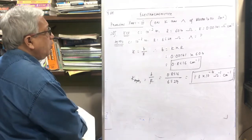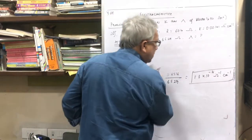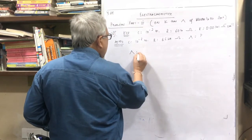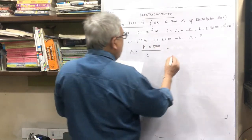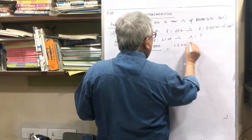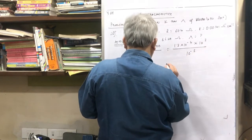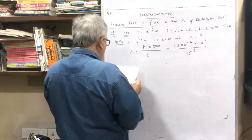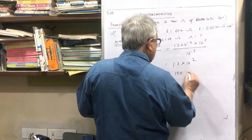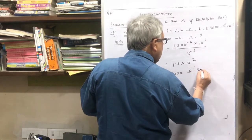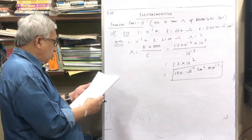Now I have to find out the molar conductivity, that is lambda. Lambda is equal to K × 1000 upon C. K is 1.3 × 10⁻⁴, multiplied by 10³, upon concentration 10⁻³. This comes to 1.3 × 10² which is 130 ohm inverse centimeter square mole inverse. So we have found out lambda for problem number 28.